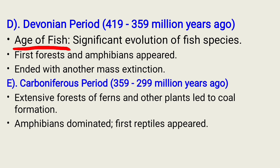The fifth sub-category of the Paleozoic Era is the Carboniferous Period, commonly known between 359 up to 299 million years ago. During this period, the events that took place were: one, extensive forests of ferns and other plants led to the formation of coal; and two, amphibians were dominant and early reptiles appeared.